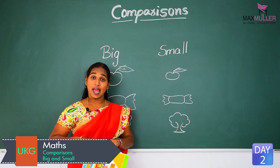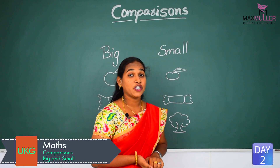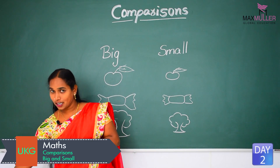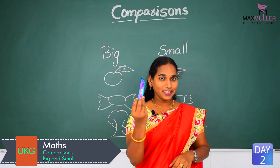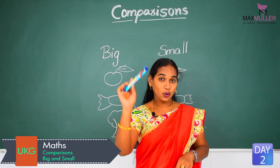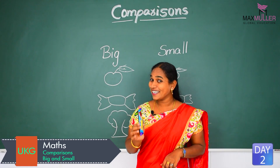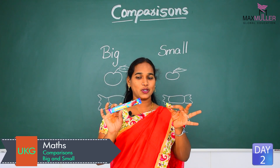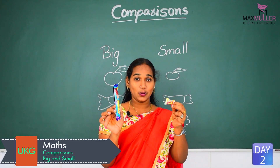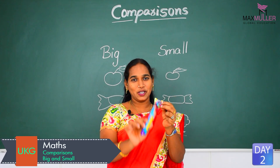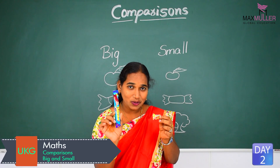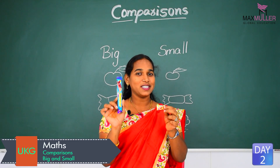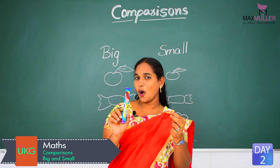Shall we see a few more examples? Okay children, shall we see a few more examples related to big and small? Let's start. See here — your favorite ones are coming. Do you like this chocolate? Now I want to give you another chocolate. So which one do you want? I will give only one, so choose. I think you want this one — because compared to these two, this is big. So this is a big chocolate and this is a small chocolate.